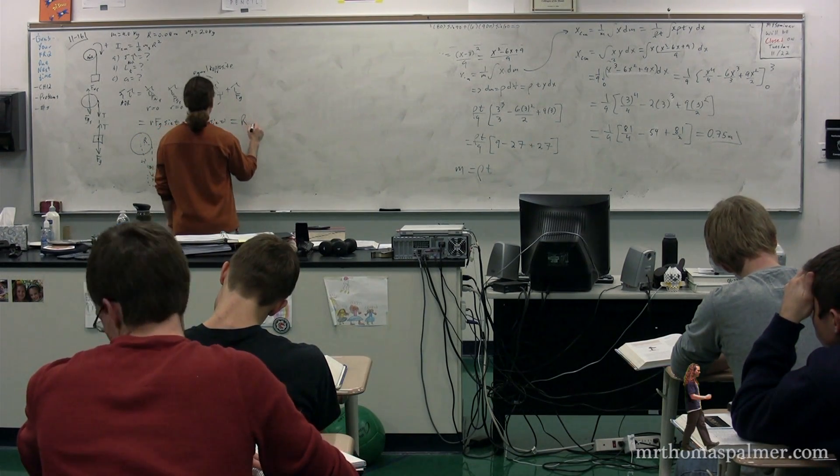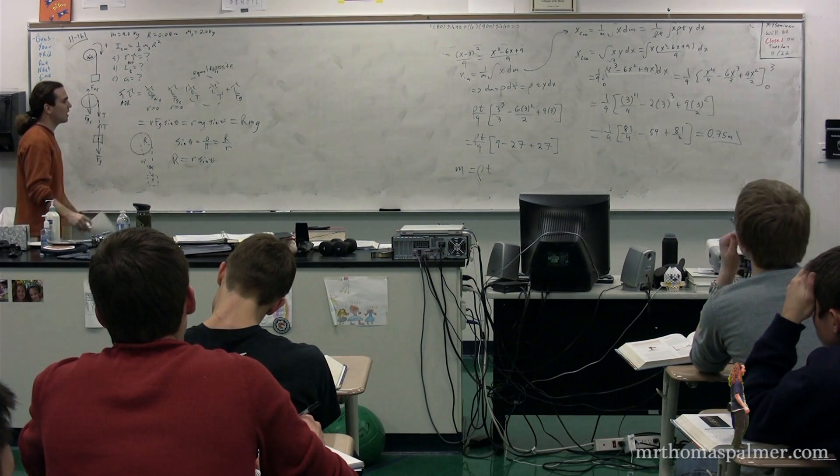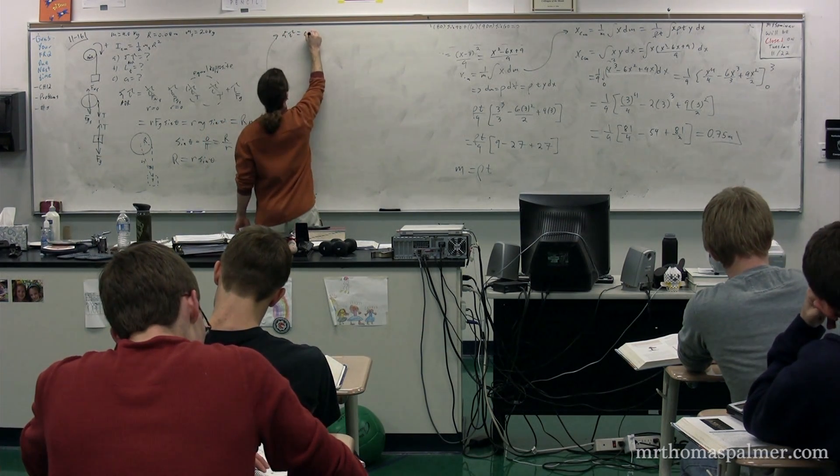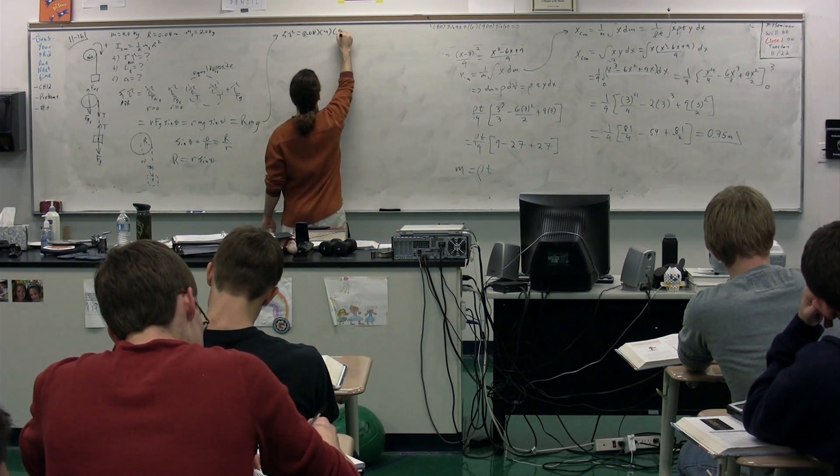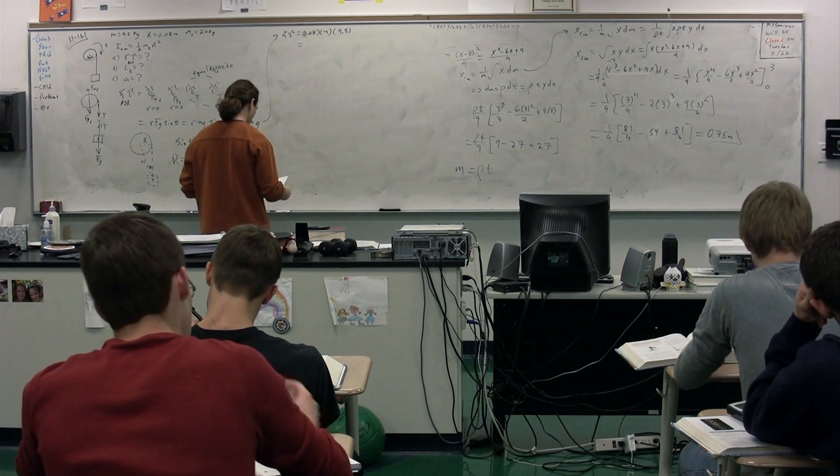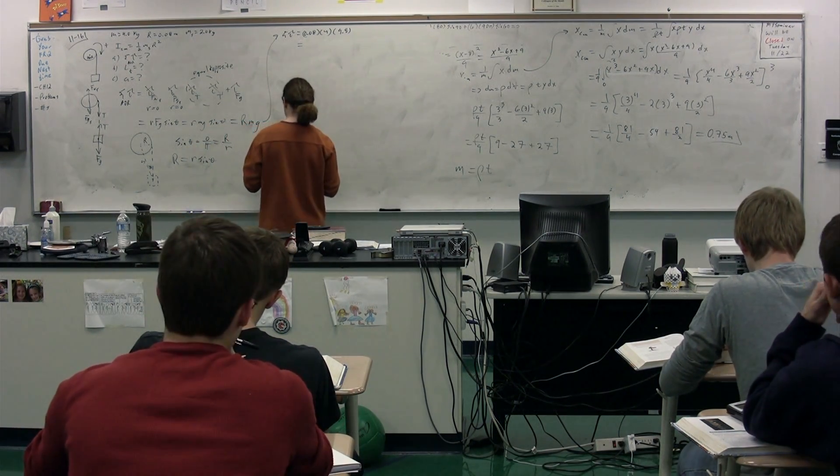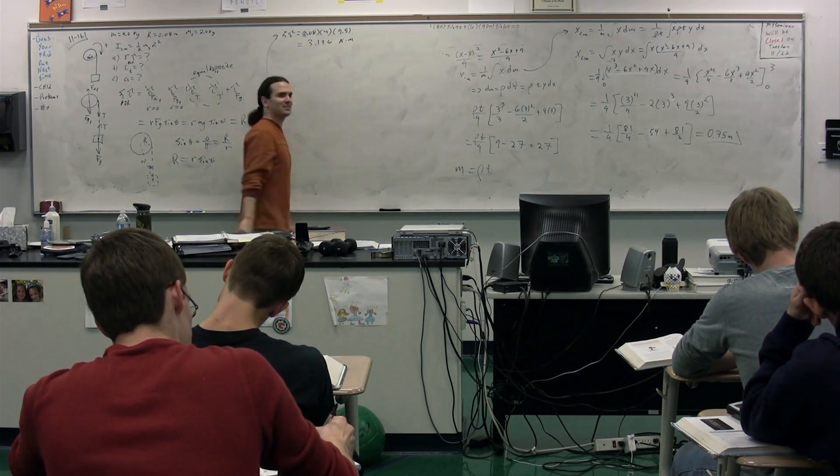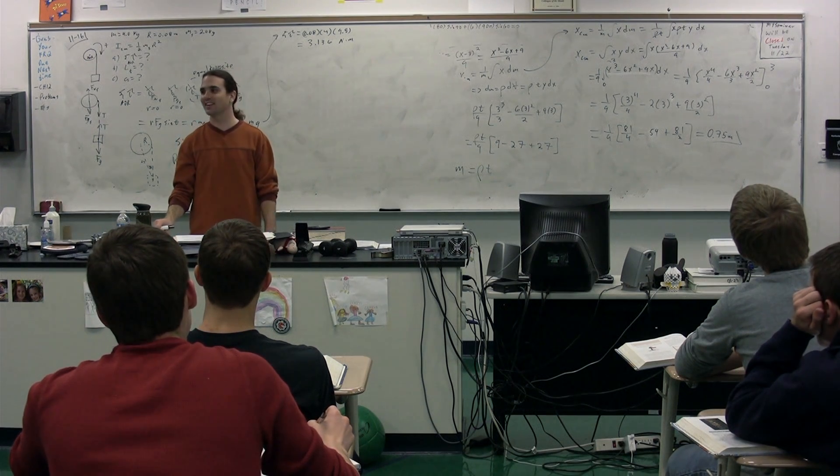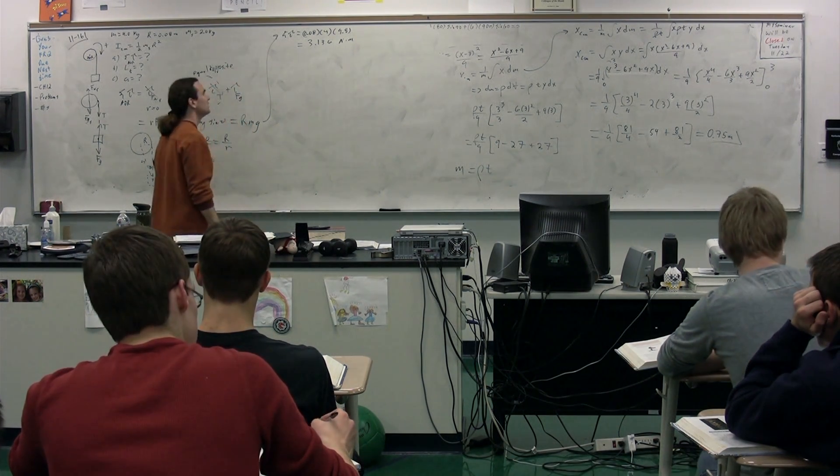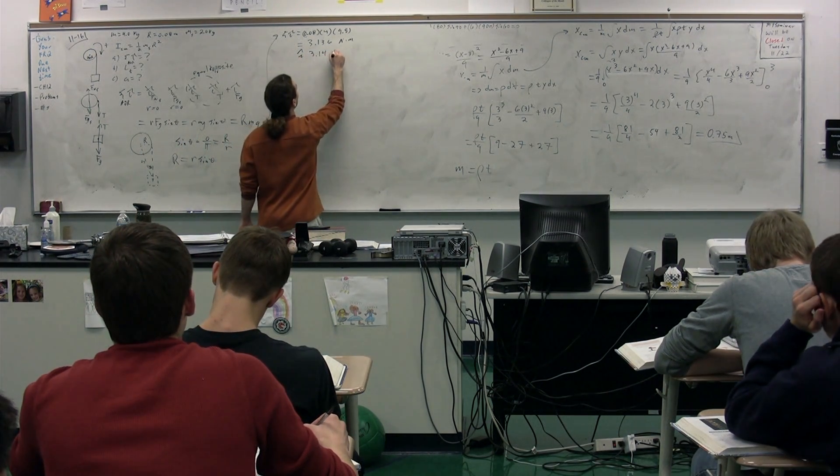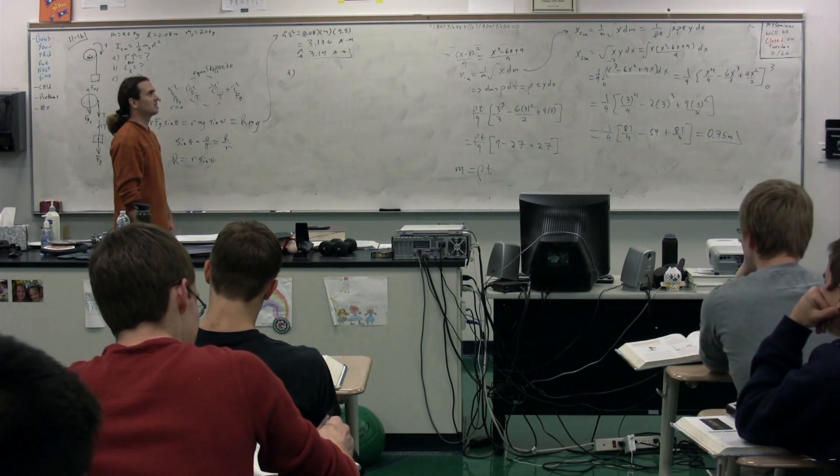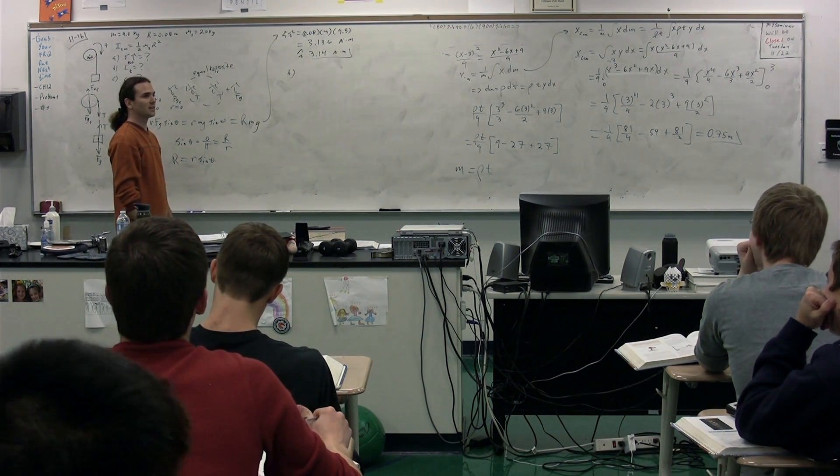So the net torque is equal to R times mg, where R is big R, the radius of the spool here. We have all of these numbers, so the net torque equals big R, 0.08, times the mass which is 4, times g, the acceleration of gravity 9.8. That's 3.136 newton meters. What are the dimensions on that? Newton meters. Is that a joule? No. Not in this case. For torque, we do not call it joules just to identify it as different. So that is our torque. It's 3.14 newton meters.